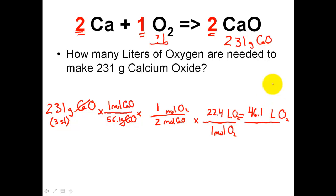So in order to produce 231 grams of calcium oxide, I'm going to need in my ingredient list 46.1 liters of oxygen.